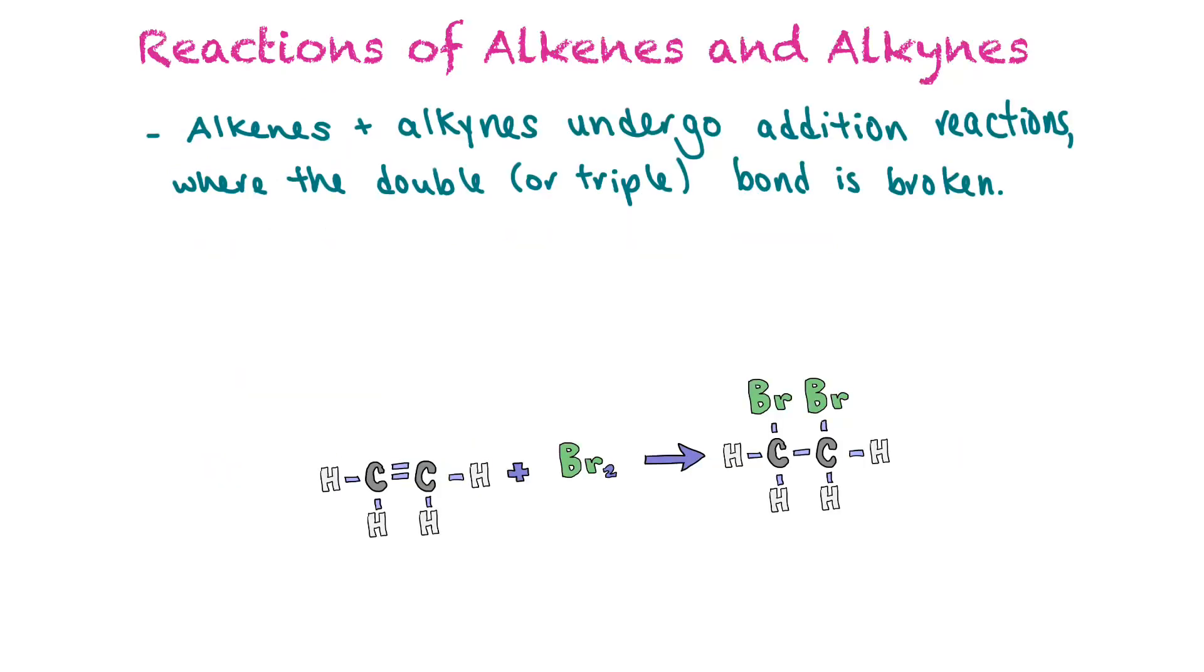So alkenes and alkynes can undergo addition reactions where the double or the triple bond is broken. And something is added across the double bond where those free electrons are. They're now freed up to bind with something else.